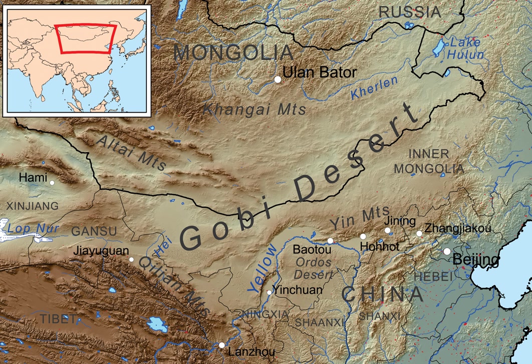The Dzungarian Basin semi-desert includes the desert basin lying between the Altai Mountains on the north and the Tian Shan Range on the south. It includes the northern portion of China's Xinjiang province and extends into the southeastern corner of Mongolia. The Alishan Plateau semi-desert lies to the east, and the Emon Valley Steppe to the west, on the China-Kazakhstan border.